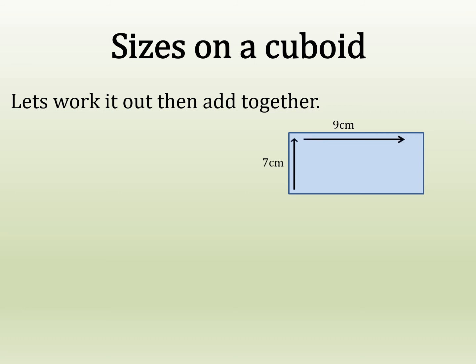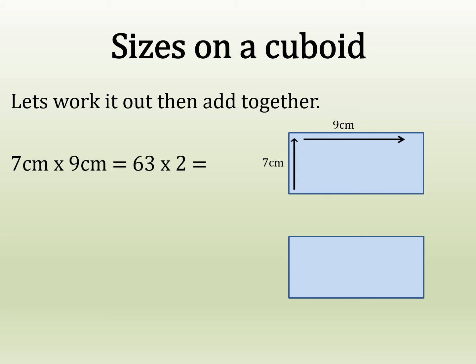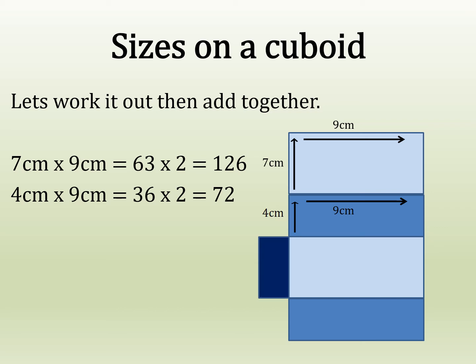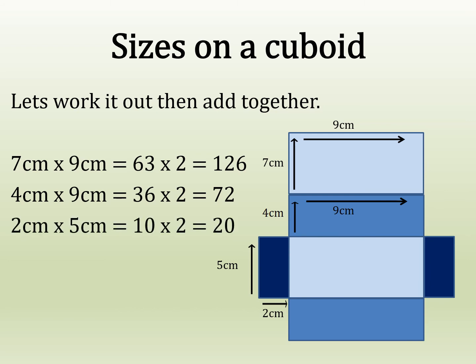Working out the surface area of a cuboid: we have nine centimetres by seven — two of them — so seven times nine equals 63, times two is 126. Next, nine times four times two gives 72. Then we have two times five, two rectangles, so that's ten times two equals 20. Adding them all together gives 218 centimetres squared.